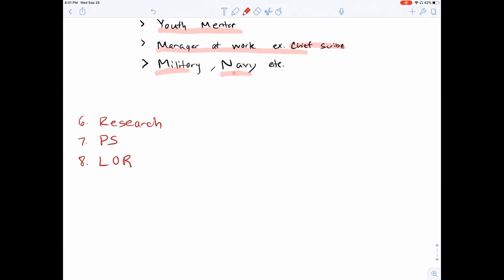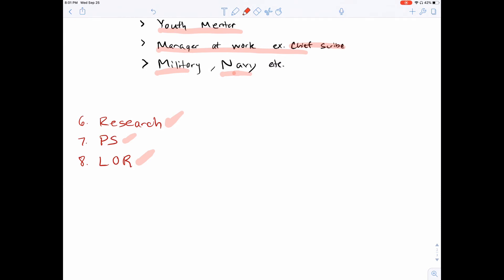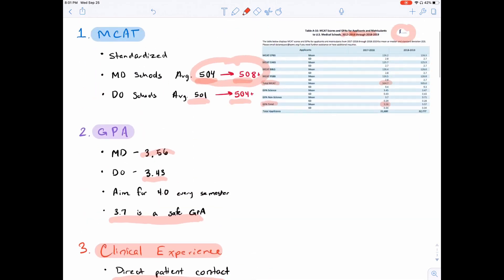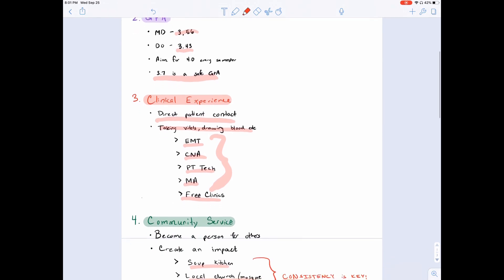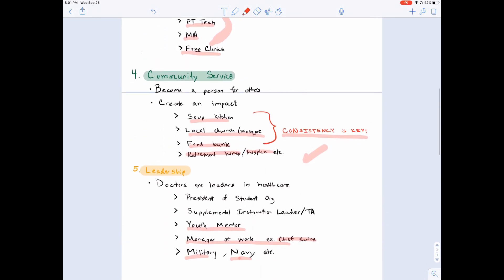Each of these things carry their own weight, and these are things that I would like to talk about in a different video. It's going to take too much time, but with that being said, I think I want to end the video over here. So just an overview, MCAT, GPA, clinical experience, community service, and leadership skills. With that being said, I hope you guys found this video very informative. I hope this gives you a better idea of what it takes to get into medical school and kind of where you stand and what you need to do.